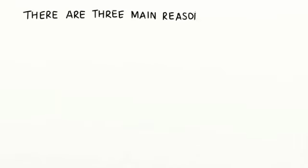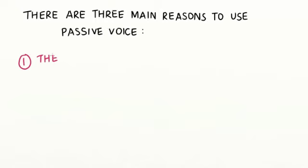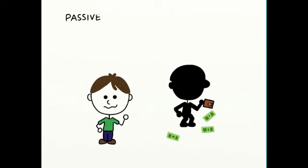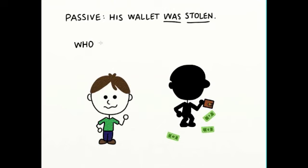There are three main reasons to use passive voice. The first reason is if the subject is unknown. For example: his wallet was stolen. Notice we use was, the past form of to be, and stolen, the past participle of steal. Who stole his wallet? We don't know — that's why we use passive voice.